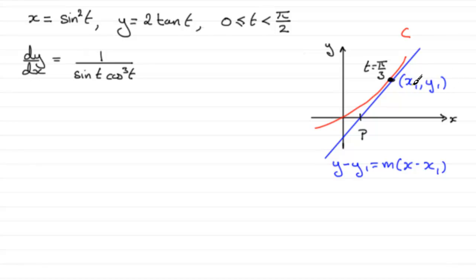So we're going to need to find out what x₁ and y₁ are when T equals π/3. We can substitute that into our parametric equations here and get the corresponding x and y values. And as for m, the gradient, well we just need to substitute T equals π/3 into dy/dx, and that will give us the gradient.